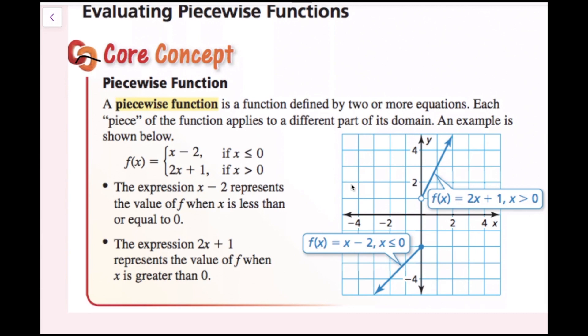You can see this function is graphed right here. We have the part that is below 0 or equal to 0 right here, and the part that is greater than 0. This is f(x) equals 2x plus 1, and this one is f(x) equals x minus 2.